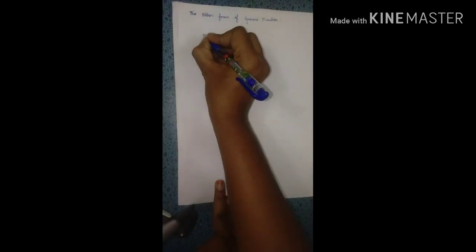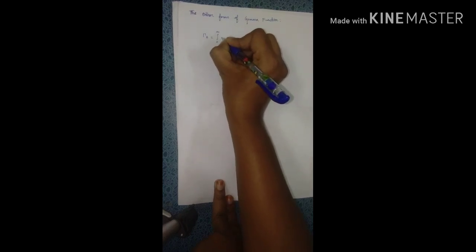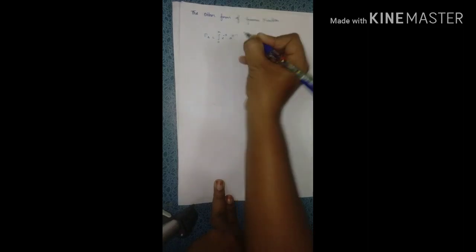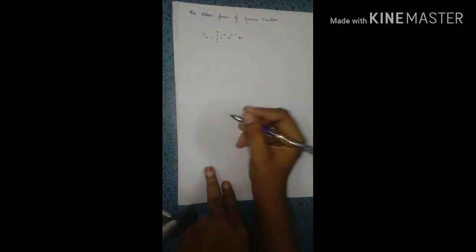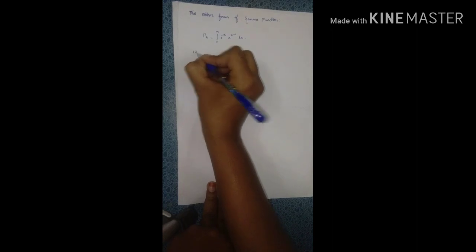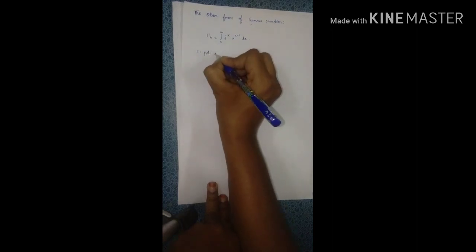The other forms of the gamma function. Gamma n equals the integral from 0 to infinity of e to the power of minus x, times x to the power of n minus 1, dx. The gamma function is going to have multiple forms. First form: put x equal to lambda y.